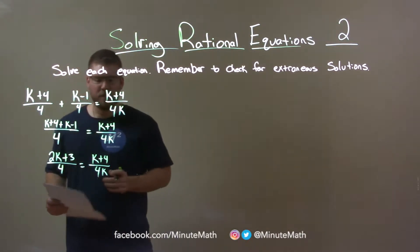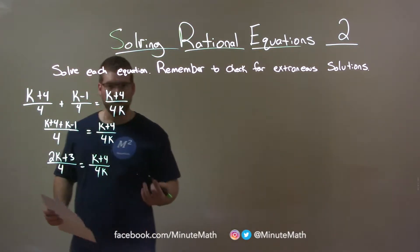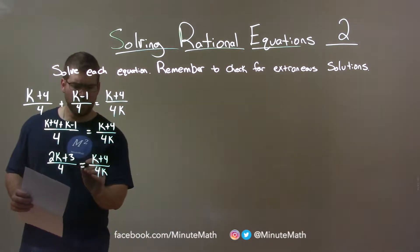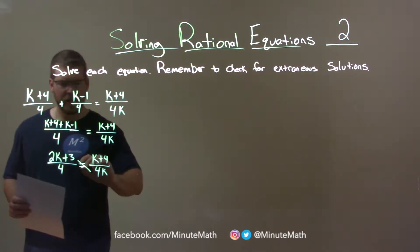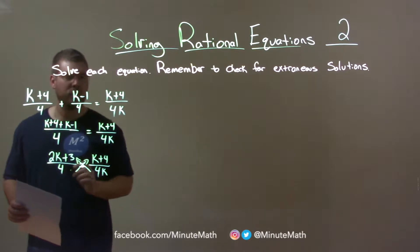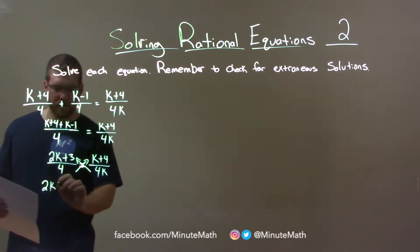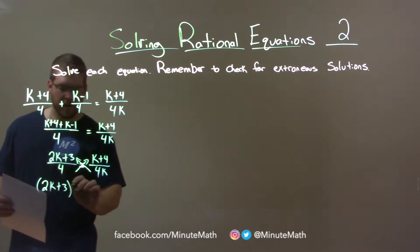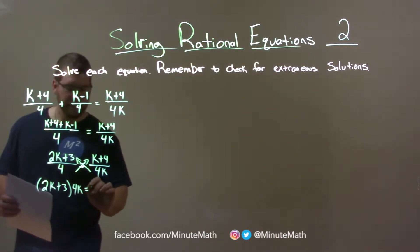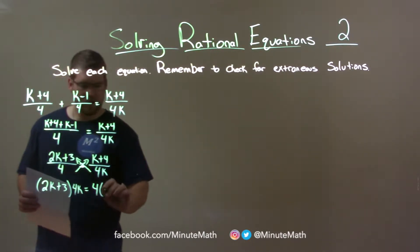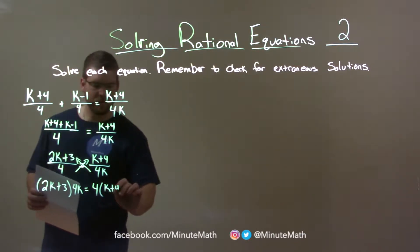So now what we're actually going to have to do is cross multiply. So cross multiplying here, 4k comes up here and the 4 goes up there.